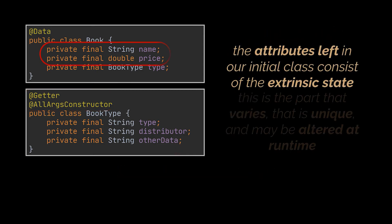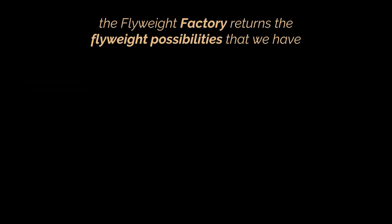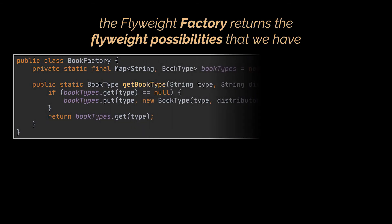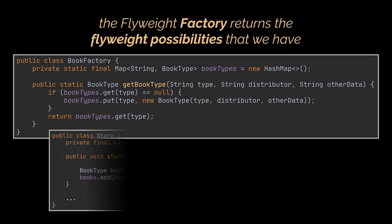The attributes we left in our initial Book class consist of the extrinsic state of the object — this is the part that varies between objects, is unique, and may be altered at runtime by our application. All that is left to do now is define the flyweight possibilities using a flyweight factory. This class usually consists of a map to cache the values of our flyweights, and whenever a BookType object is requested, a new flyweight object is created for it and stored inside this map, making it reusable by all objects that need it.